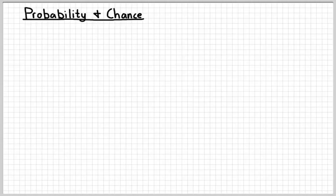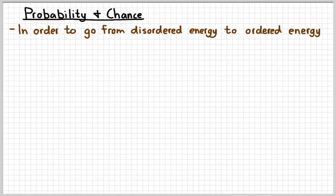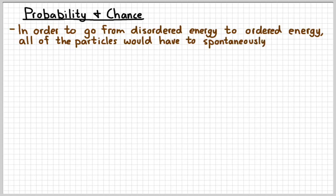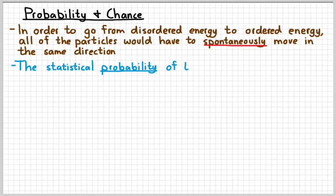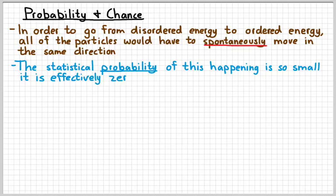In order to answer that question, we need to do a little bit of investigation on probability and chance. In order for us to go from disordered to ordered energy, all of the particles would spontaneously, meaning on their own, start to move in the same direction. Now we're not going to go through the statistical proof of that, but the statistical probability of that happening is so small that it is effectively zero. In other words, the chances of that actually happening on its own statistically are so small that it is impossible.